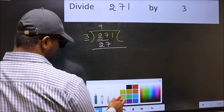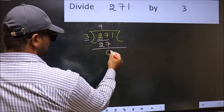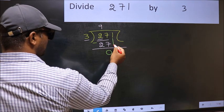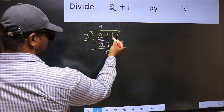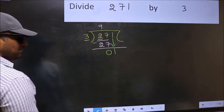Now you should subtract. 27 minus 27 is 0. After this, you should bring down the next number. So bring 1 down.